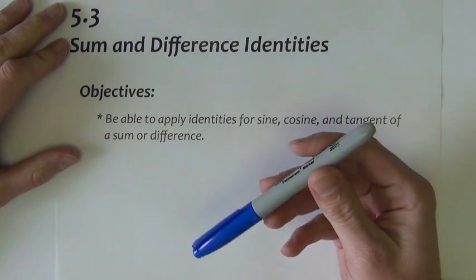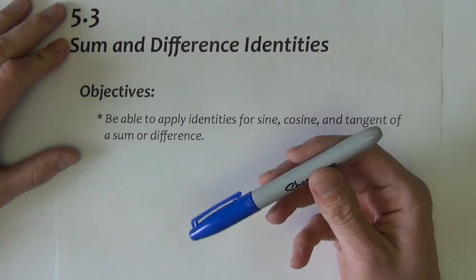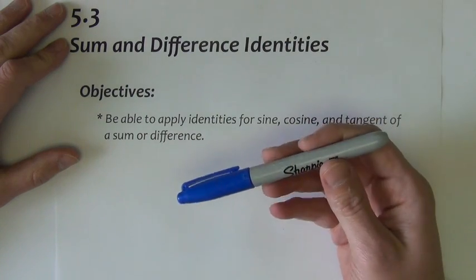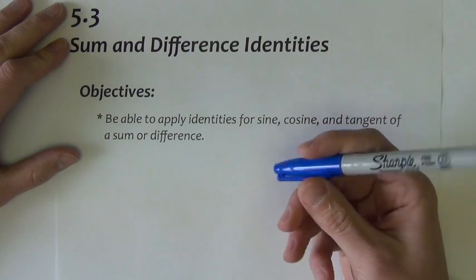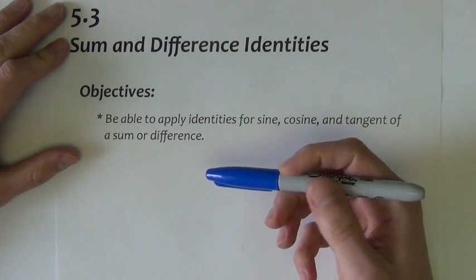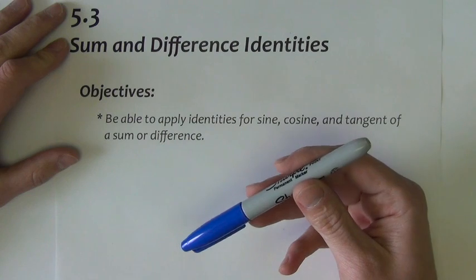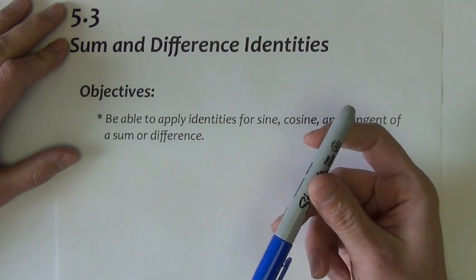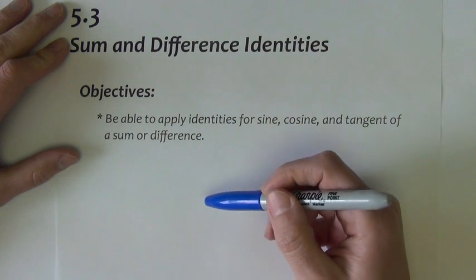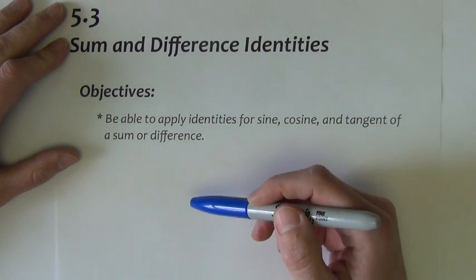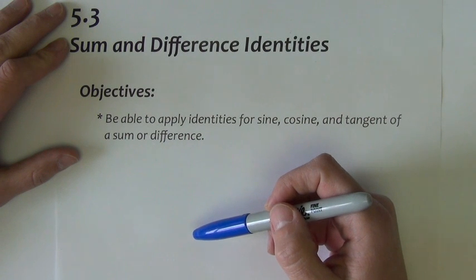In section 5.3, we're going to go over a new set of identities called sum and difference identities. They're going to allow us to mainly find the exact values of sine, cosine, tangent, and of angles possibly that are not on our unit circle already built from the 30, 60, and 45, 45, 90 right triangles.